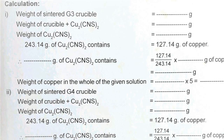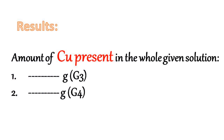Similarly, we calculate the weight of copper in the whole of the given solution for the G4 crucible as well. Therefore, the amount of copper present in the whole of the given solution is equal to the calculated value for the G3 crucible and the G4 crucible respectively.